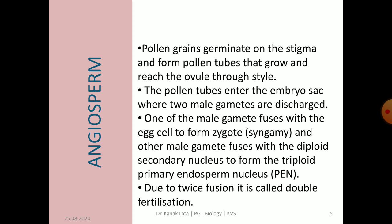When pollen grains reach the stigma, they start germinating and form pollen tubes. This pollen tube reaches the ovule through the stylar region. The pollen tube enters the embryo sac where two male gametes are discharged. One pollen grain releases two male gametes. Out of two male gametes, one fuses with the egg cell to form zygote — this is called syngamy. The other male gamete fuses with the diploid secondary nucleus to form triploid primary endosperm nucleus, also called PEN, and this process is called triple fusion. Due to twice fusion, it is called double fertilization.